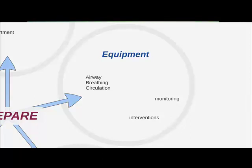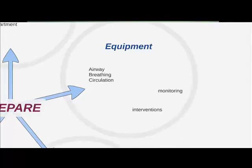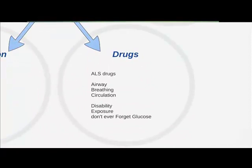Equipment relates to what we're going to do with the patient. You need monitoring equipment, and you might need intervention equipment in each area of the alphabet — airway equipment for supporting the airway or intubation, breathing equipment, and circulation things: cannulas, fluids, intraosseous drills, etc. That brings us to drugs: your normal ALS drugs like adrenaline, and specific drugs for breathing, such as salbutamol or other beta agonists. Whatever scenario you're anticipating, you can prepare for it.